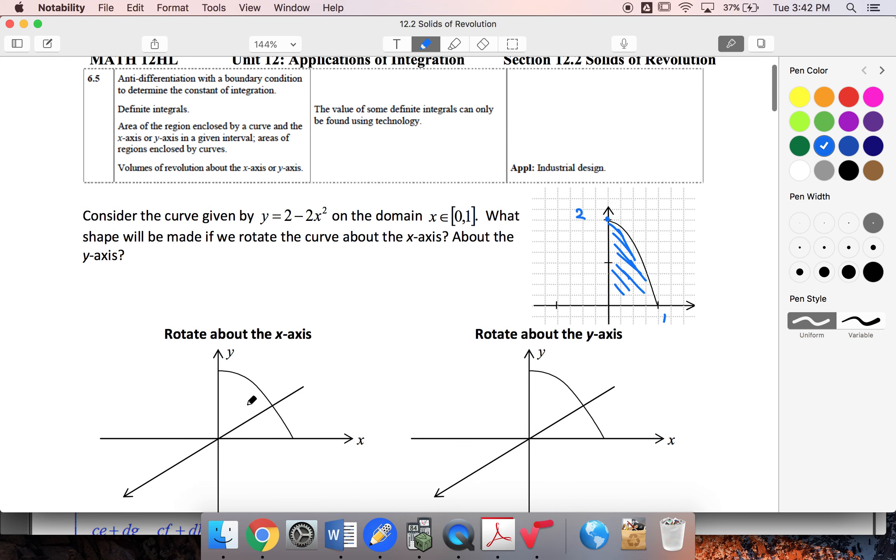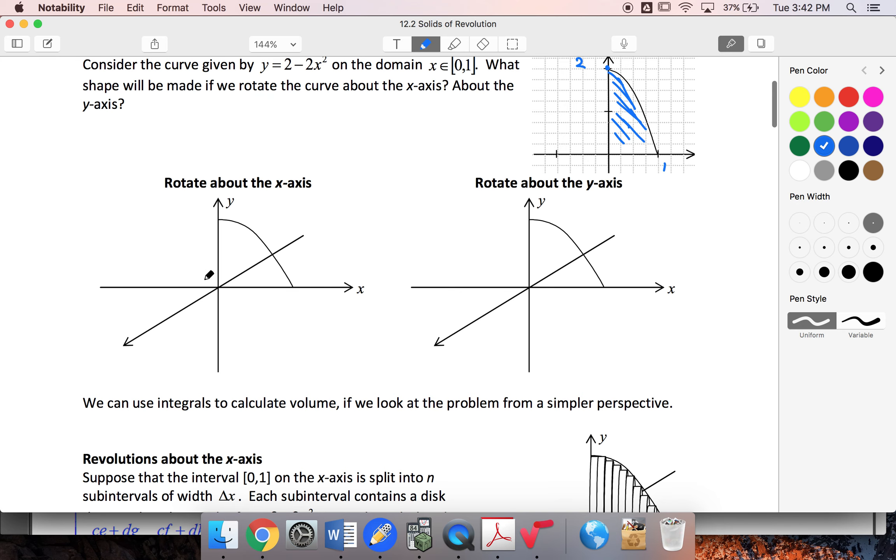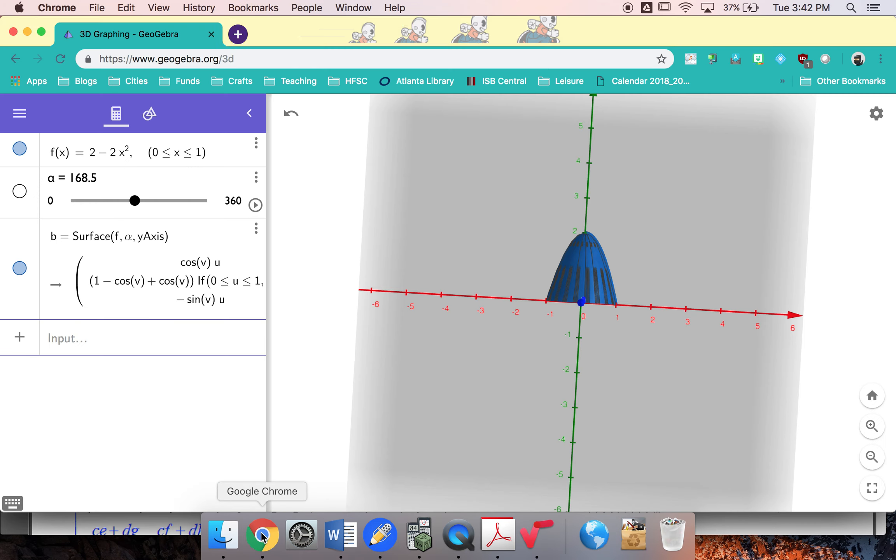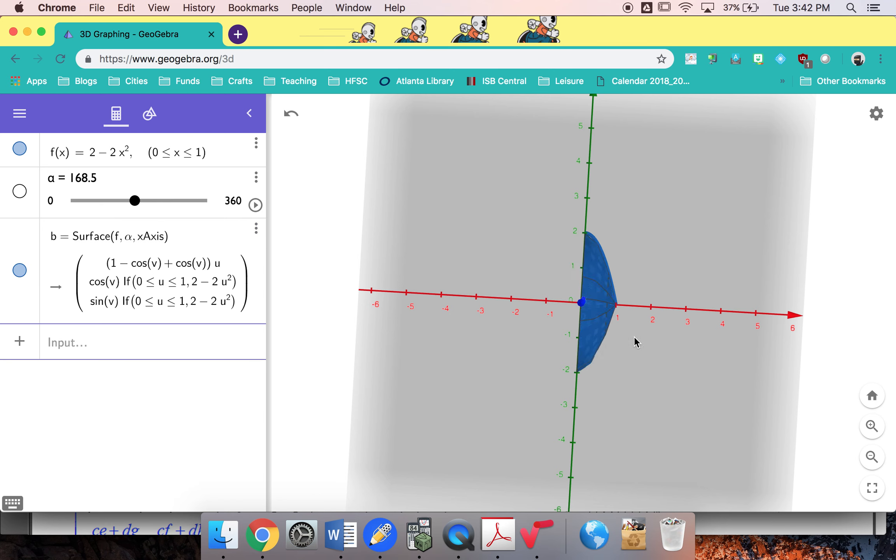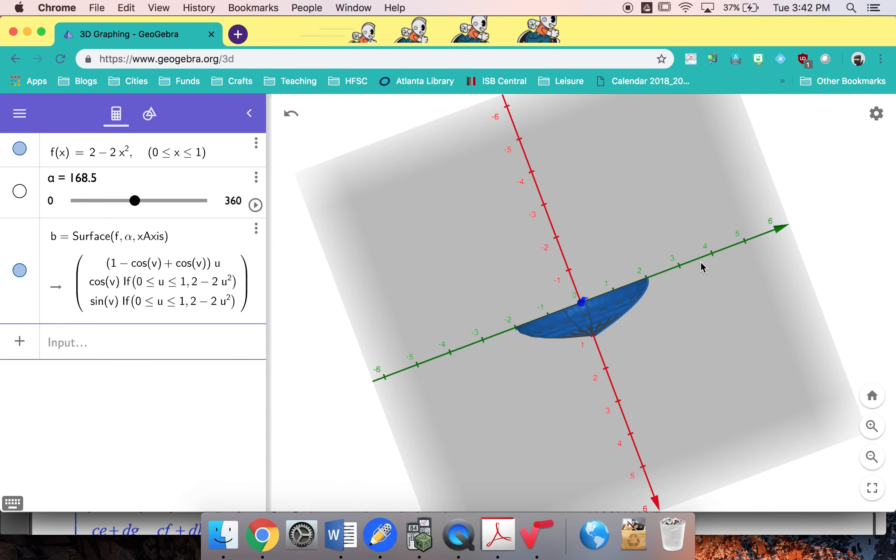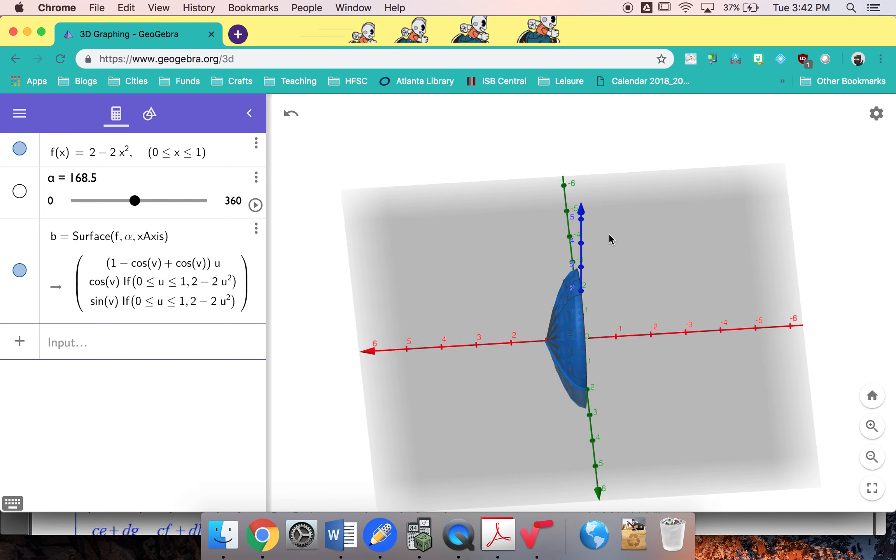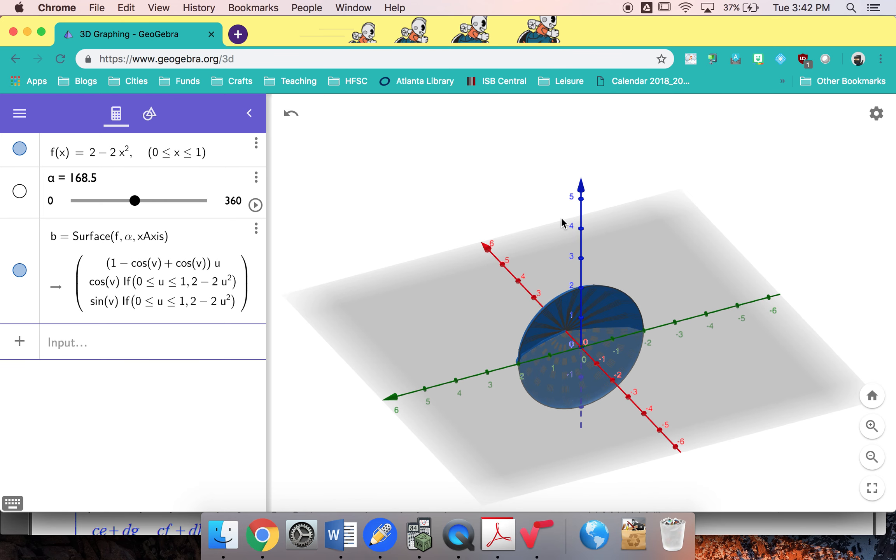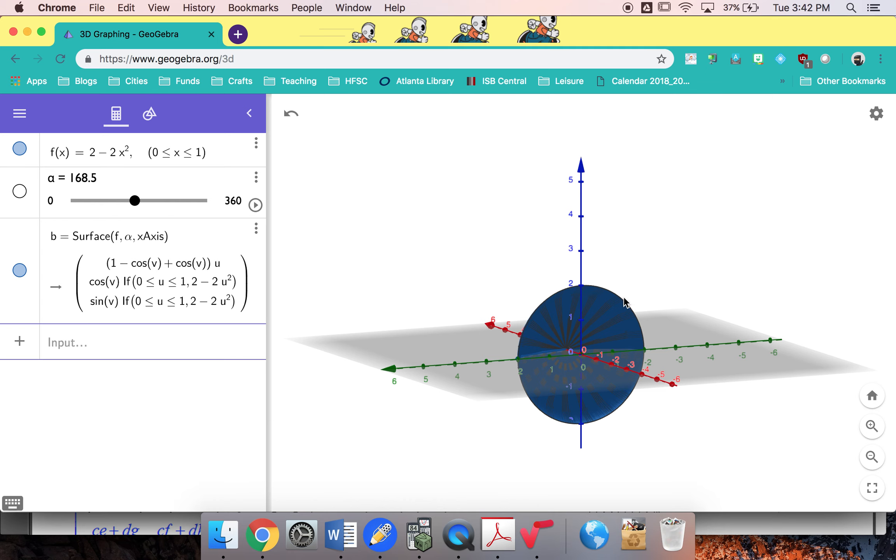So if we think about what that shape's going to look like, I'm not so good at drawing it, so I've gone ahead and put it into Geogebra. This one I've done around the y-axis, so let me go ahead and change this to be the x-axis. And when I go about the x-axis, here is my shape. So we started with our parabola, here it was.